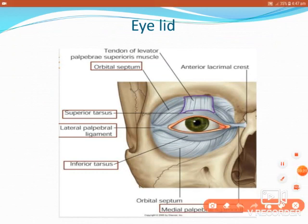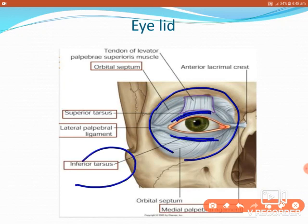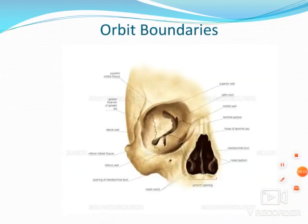The bony orbit contains the eyeball and associated structures. The eyelid is covered externally by skin, then subcutaneous tissue, then muscle fibers, and deep to that a fibrous tissue forming the superior and inferior tarsal plates. These tarsal plates meet medially to form the medial palpebral ligament — attached to the lacrimal crest of the maxilla — and laterally to form the lateral palpebral ligament, attached to the tubercle of the zygomatic bone.